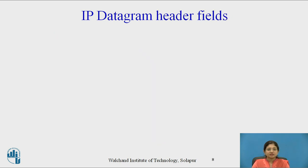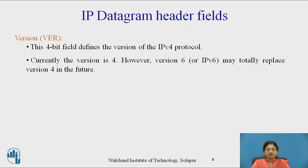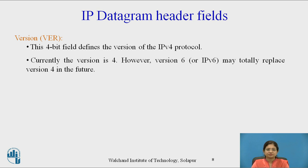Let's start with the version field. This 4-bit field defines the version of the IPv4 protocol. Currently the version is 4, that's why we call it the IPv4 protocol. However, version 6 or IPv6 may totally replace version 4 in the future.